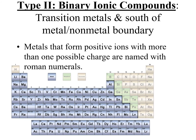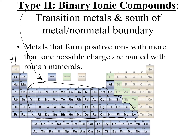Type 2 ionic compounds include transition metals and metals below the metalloid line. Type 1 means the element forms only one charge that never changes: column 1 forms plus 1, column 2 forms plus 2, column 3 forms plus 3 — but that applies only to the first two metals in that column. The rest can form multiple charges, making them type 2. Elements in columns 1, 2, and part of column 3 are type 1.